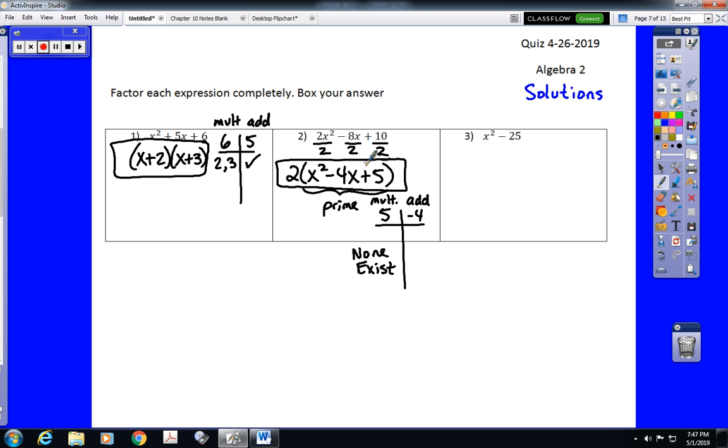Finally, on number three, we have a difference of two perfect squares. Again, we should have our pattern relatively memorized by this point, but that means that that factors into the square root of the first term plus the square root of the second term times the square root of the first term minus the square root of the second term. So, we need to ask ourselves, what's the square root of twenty-five? It is five. So, we should know that that factors into x plus five and x minus five.